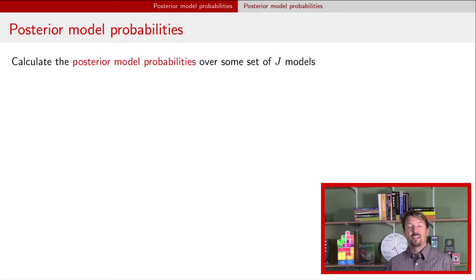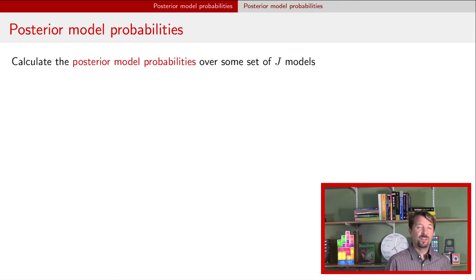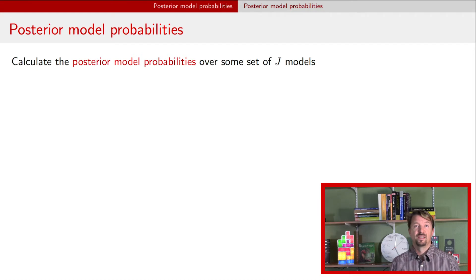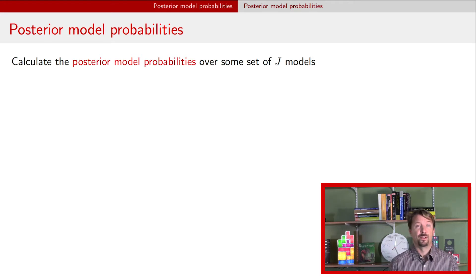Hi, I'm Dr. J and this is a video about Bayesian posterior model probabilities. It's the second video in a three-part series talking about how to do these calculations. In the first video we dealt with situations where we had an alternative hypothesis that was one-sided — a null hypothesis saying that the parameter is less than or equal to a value and the alternative saying that it's greater than that value.